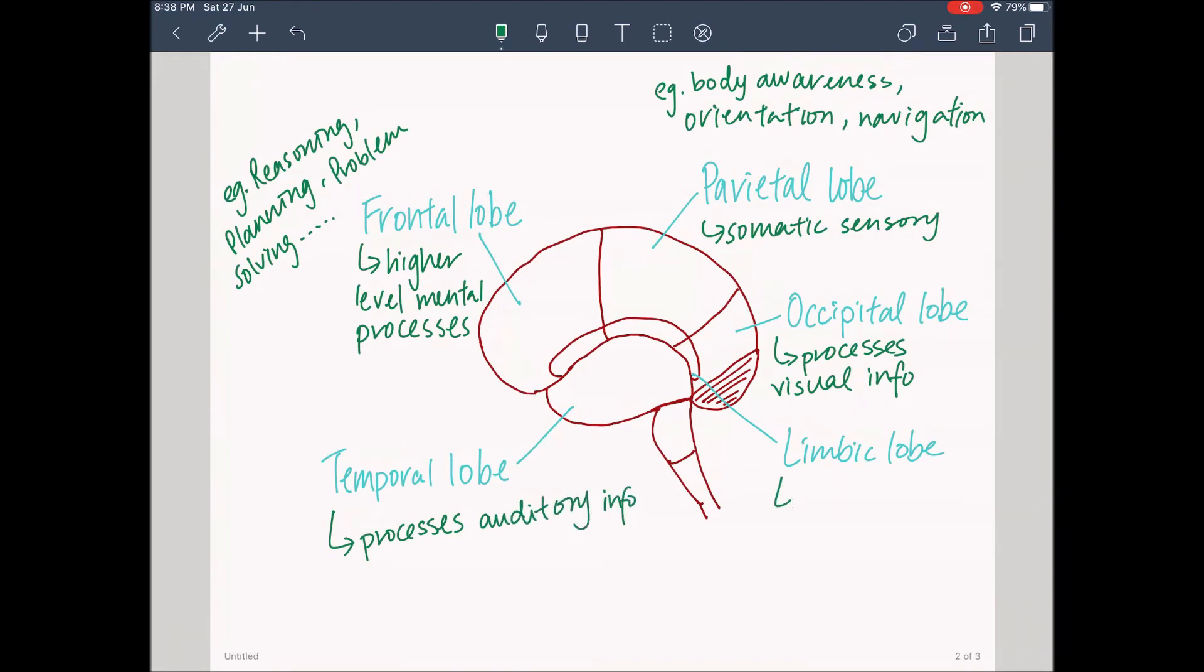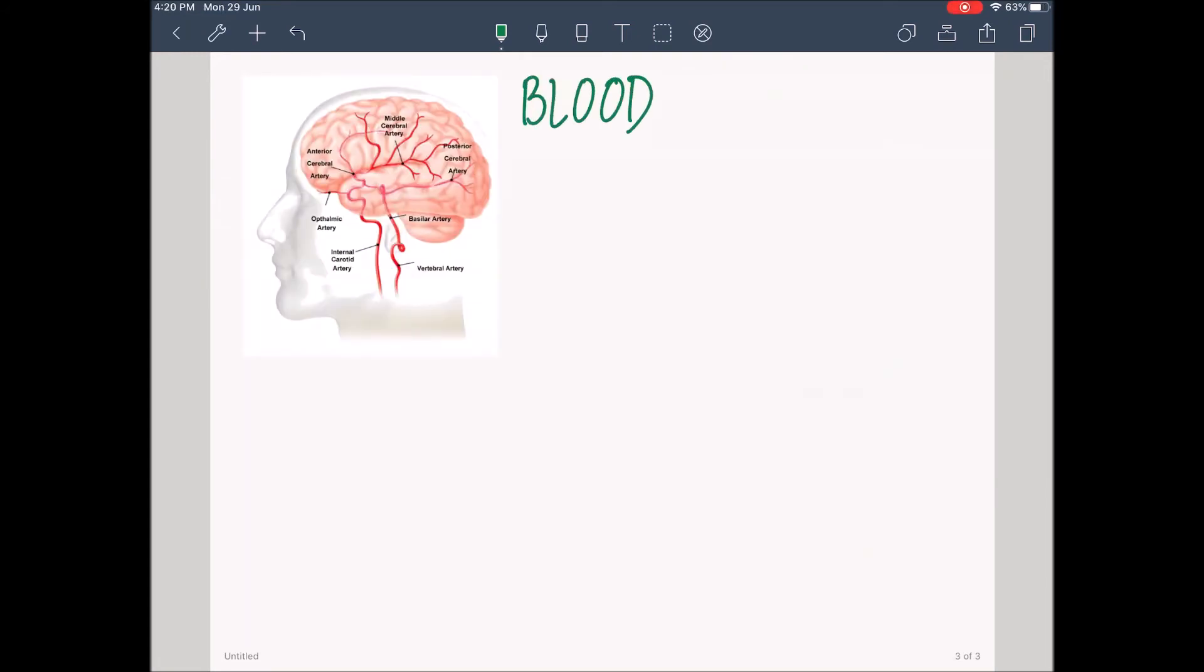The limbic lobe includes a portion of each lobe of the cerebral cortex. It is responsible for emotion, behavior, motivation, and long-term memory. The blood supply to the brain.